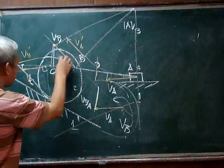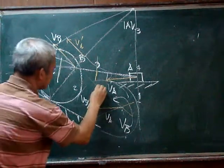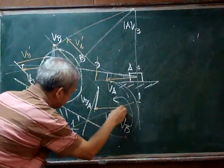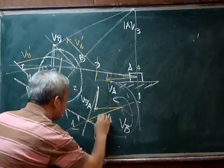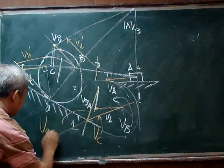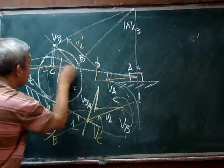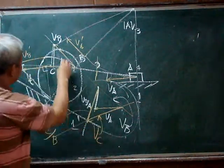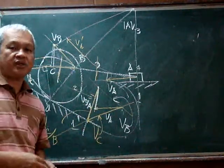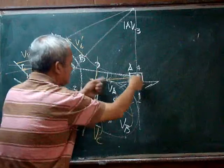We know that the relative velocity of C with respect to B must be perpendicular to this line, so we can draw it from here. There is an intersection here, and that must be the velocity of C. This one is the relative velocity of C with respect to B, which is perpendicular to line BC. So in all three methods, we are able to determine the velocity of C and velocity of B using the velocity of A.